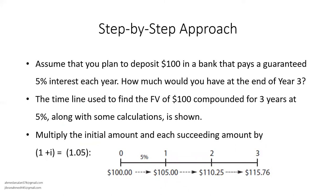So the first step in our example: assume that you plan to deposit $100 in a bank that guarantees 5% interest each year. How much would you have at the end of three years? We can calculate this by using formulas, which I have shown you in the last slide.